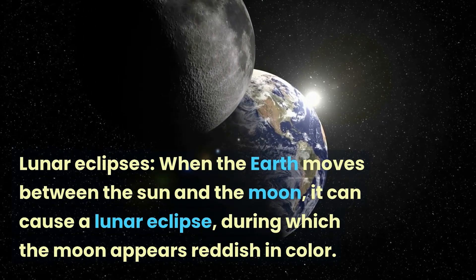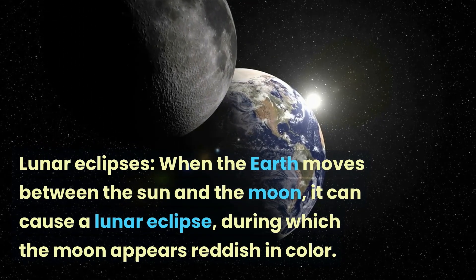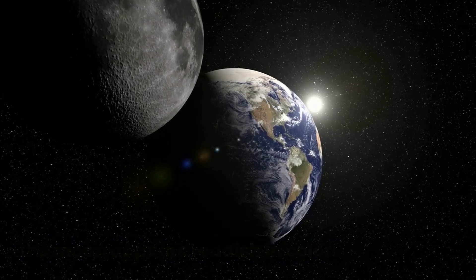When the Earth moves between the Sun and the Moon, it can cause a lunar eclipse, during which the Moon appears reddish in color.